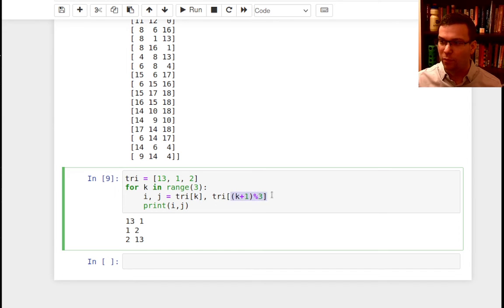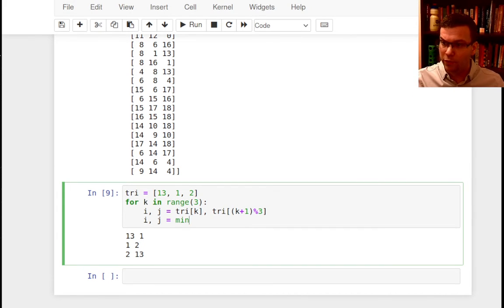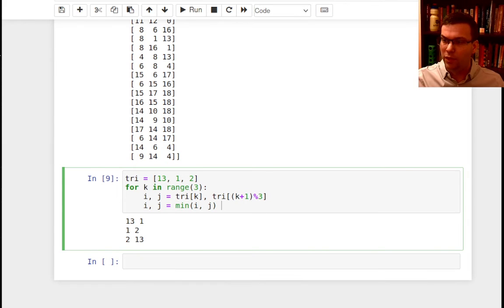So this with the mod here, this cycles through. It says, I want 0, 1, 1 to 2, and then 2 back to 0. Those are the three edges that are involved in a triangle. And so that's how I get them. The other thing I'm going to do here is I'm going to say i, j, is equal to, just so I have a canonical ordering, I'm going to make i be the smaller index and j be the larger index.